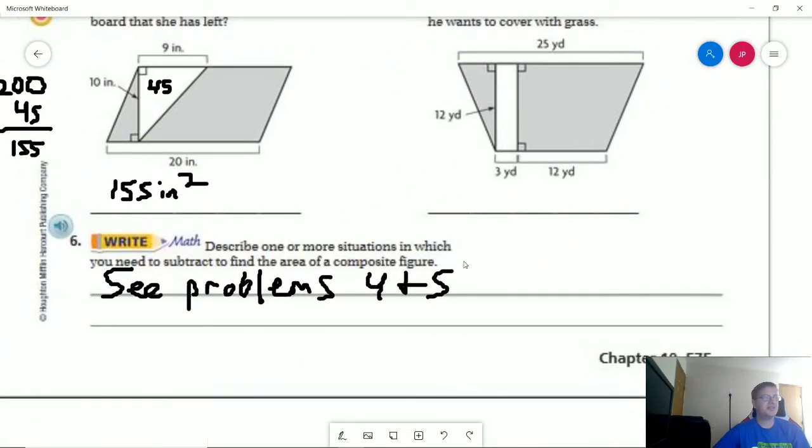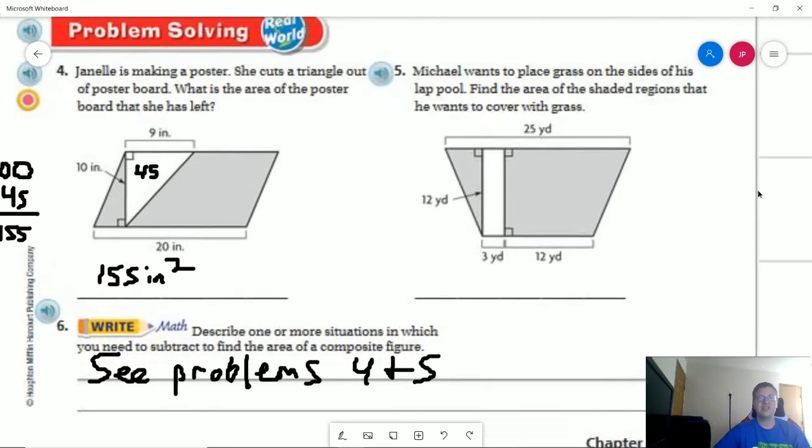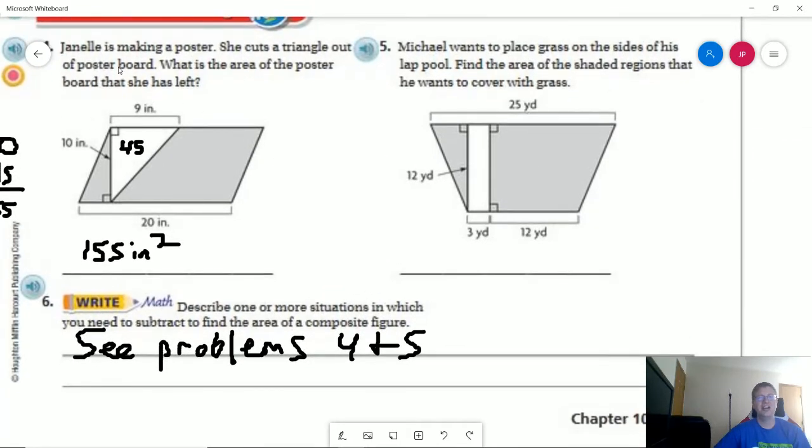Number six. So describe two or more situations you need to subtract to find the area of the composite figure. Well guess what? In number four and five we did exactly those things. So if we wanted to cut out part of a shape and figure out how much is left, or if we need to put down grass, this would be the part for our pool, but we didn't solve this problem. That would help us inform how much of the area that we need to fill with grass.